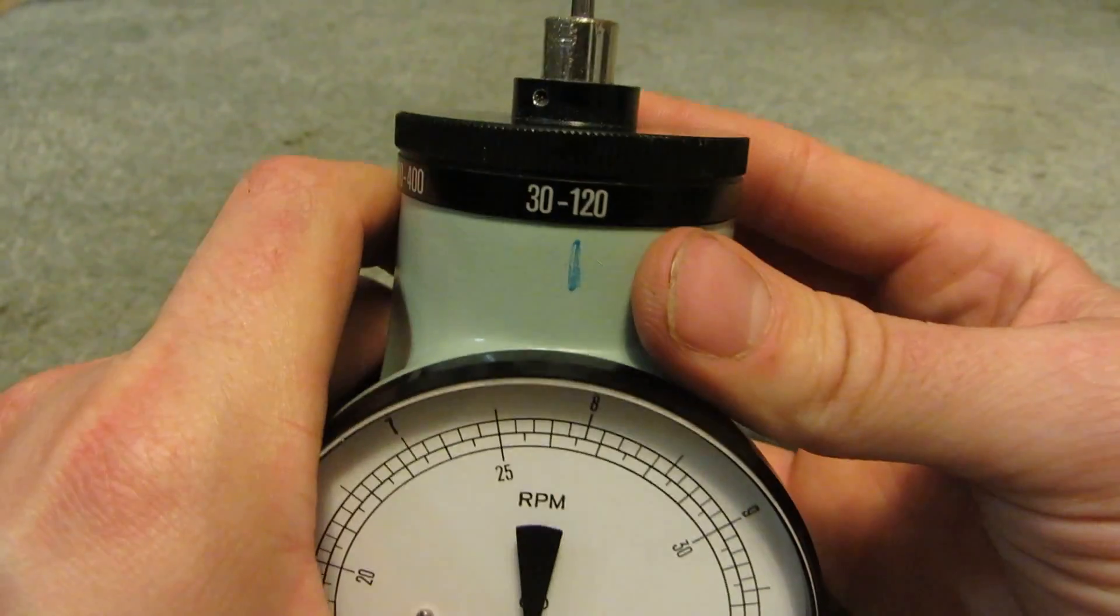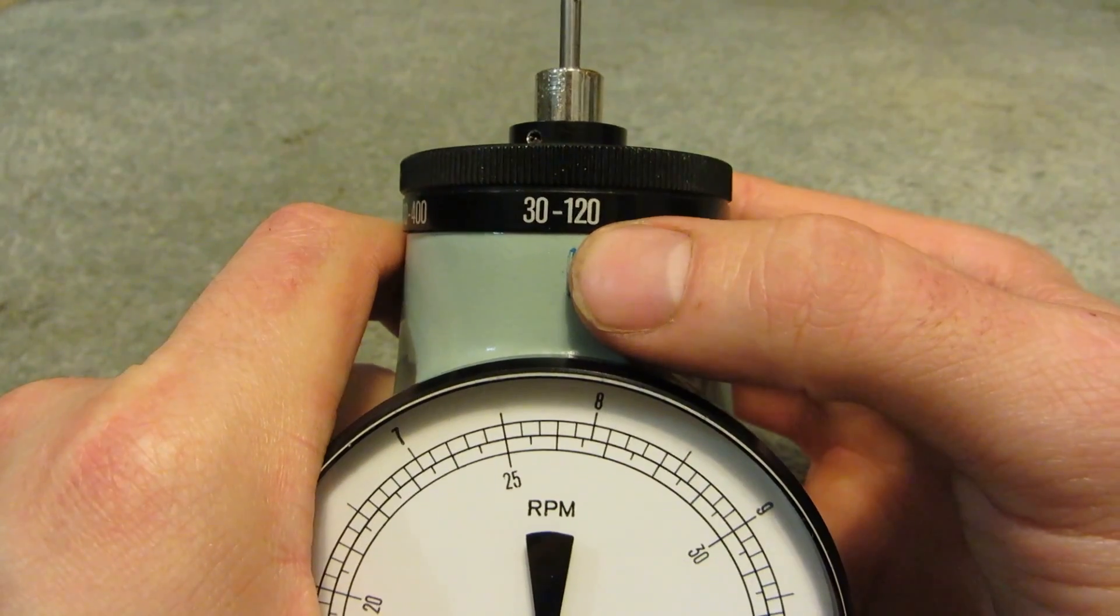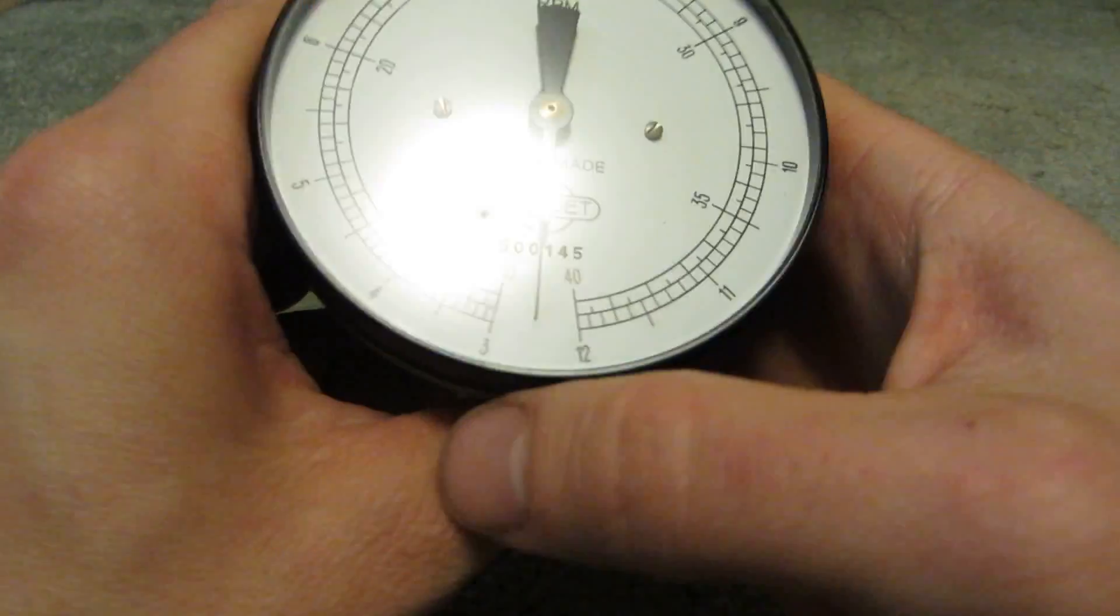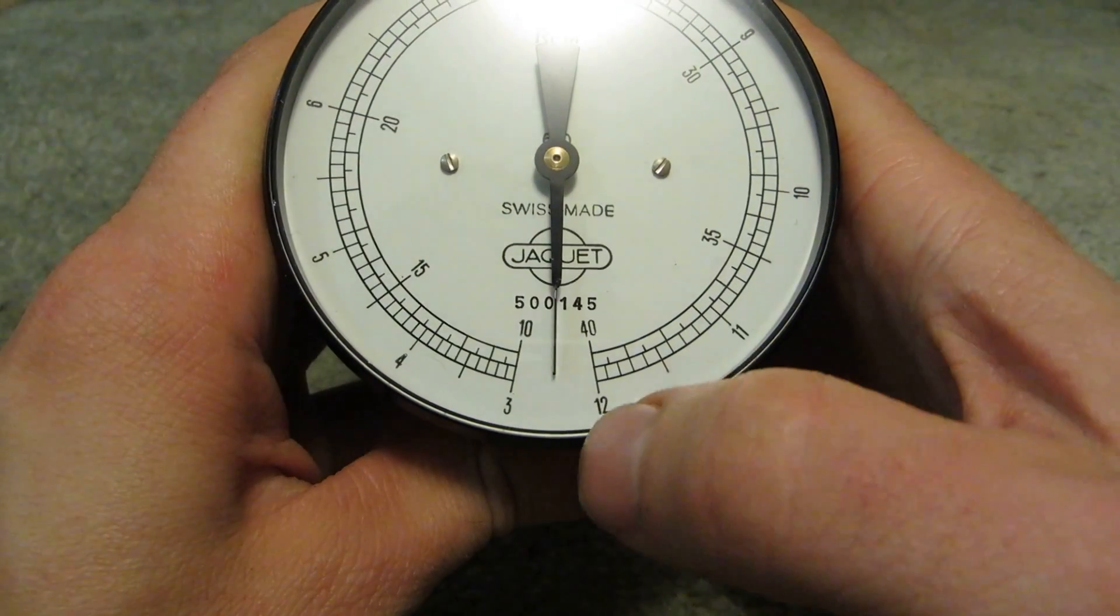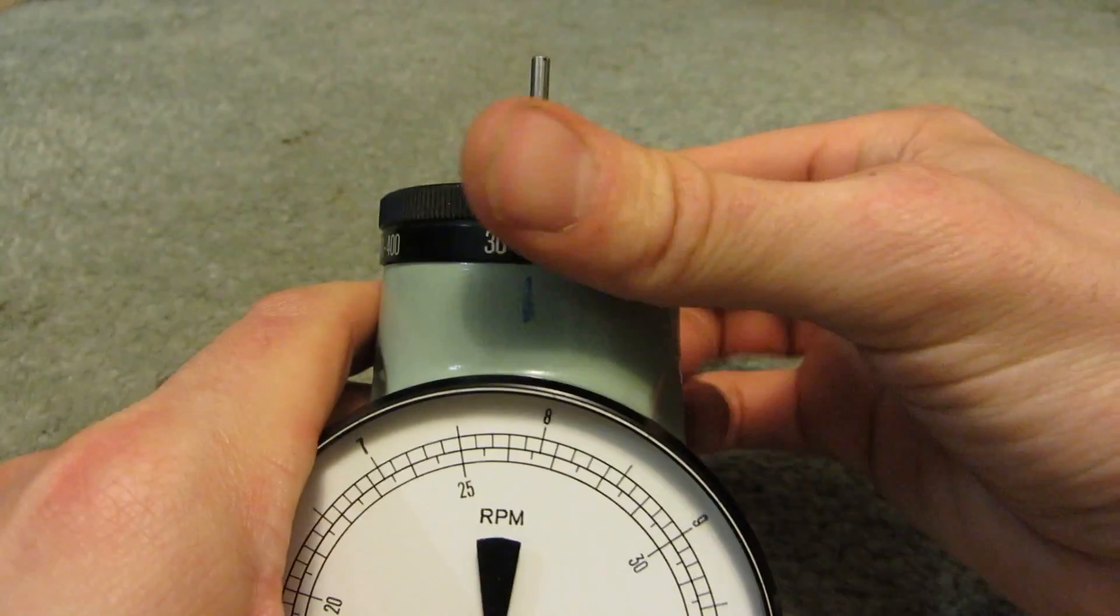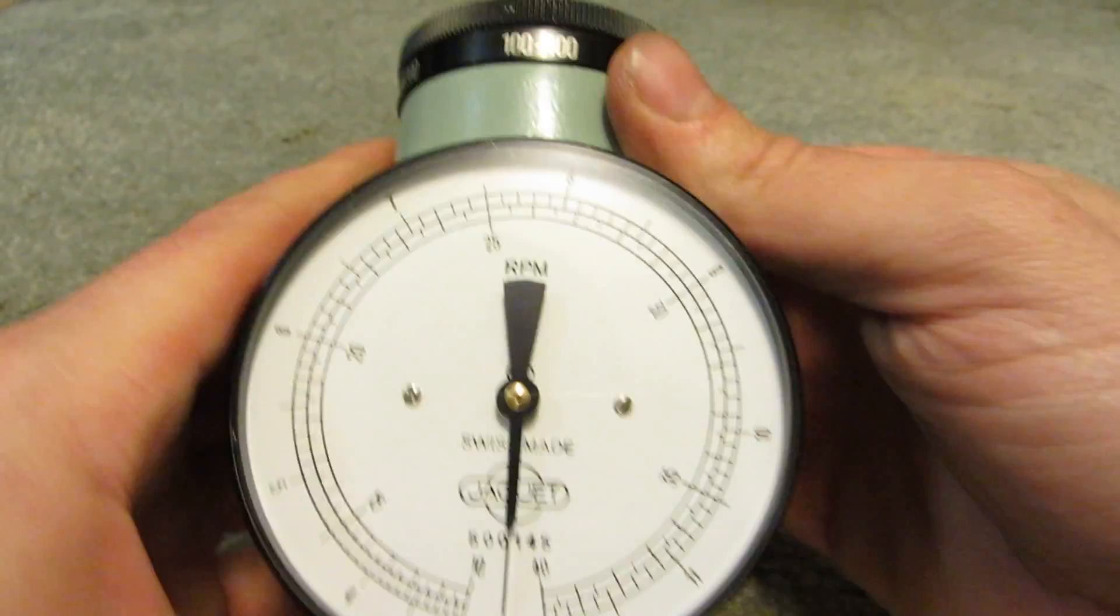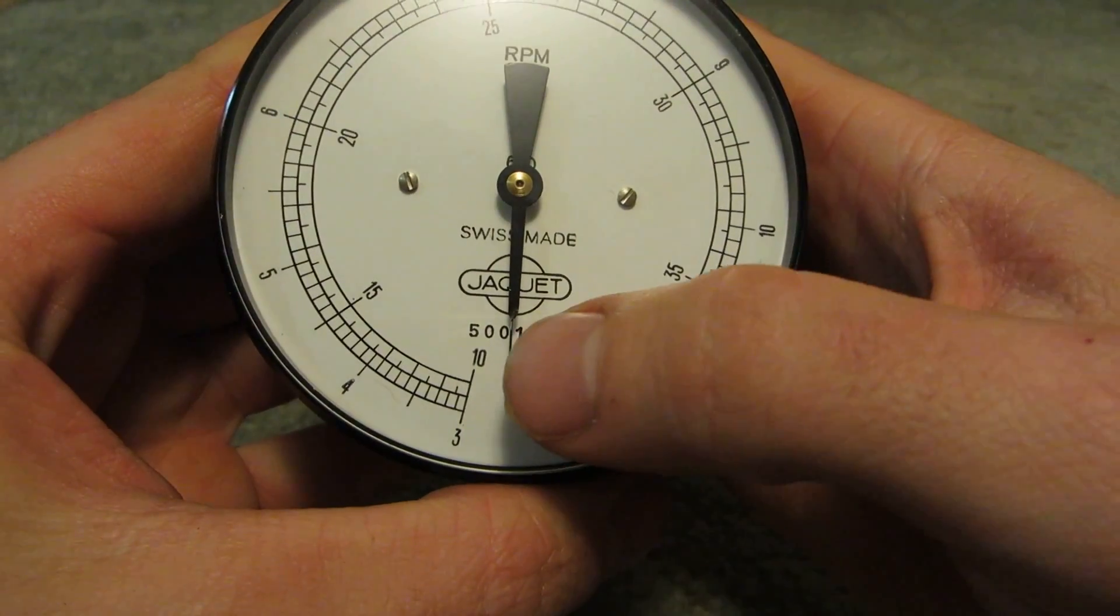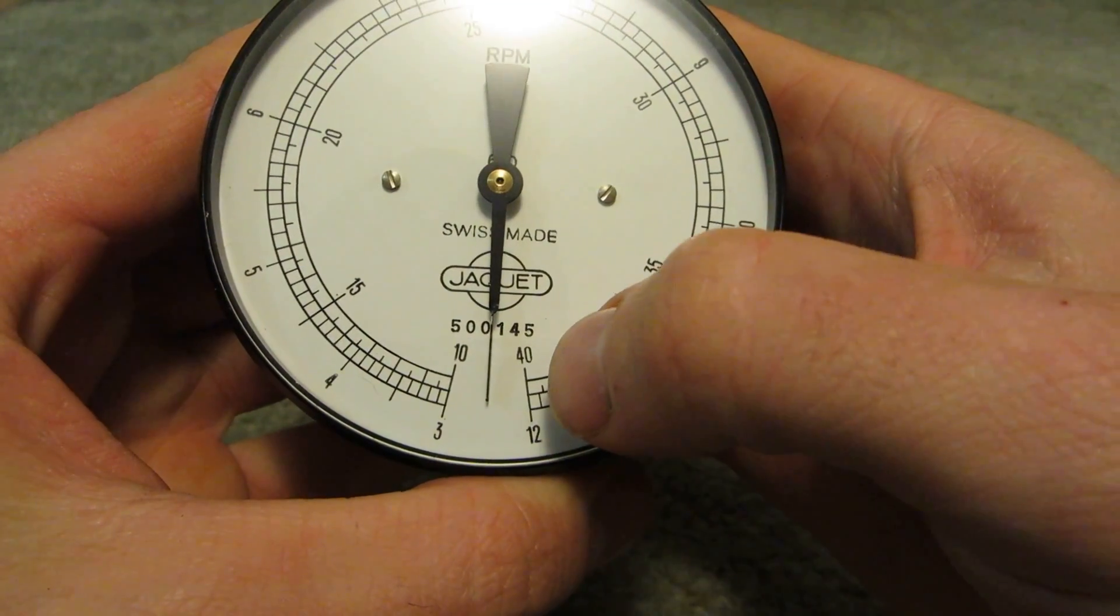And when you want to pick the RPM range, like for here 30 to 120 so you'll be looking at the outside numbers so that would be 30 and over here would be 120. And if you need something higher you just rotate the whole top. So that's 100 to 400. So in this case you're looking at the inside number. That would be 100 and over here would be 400.